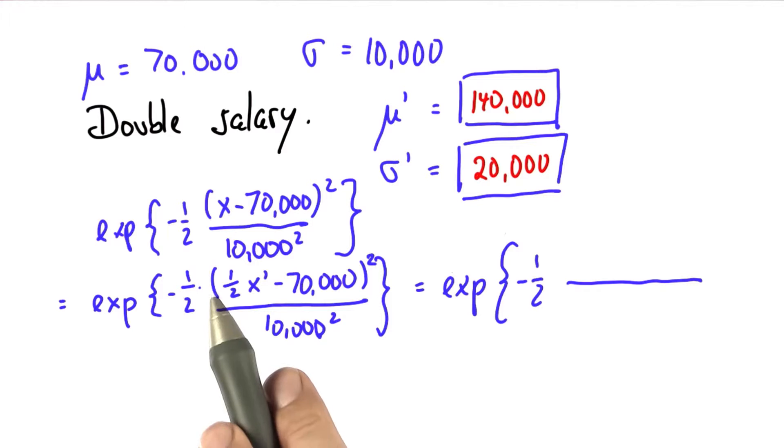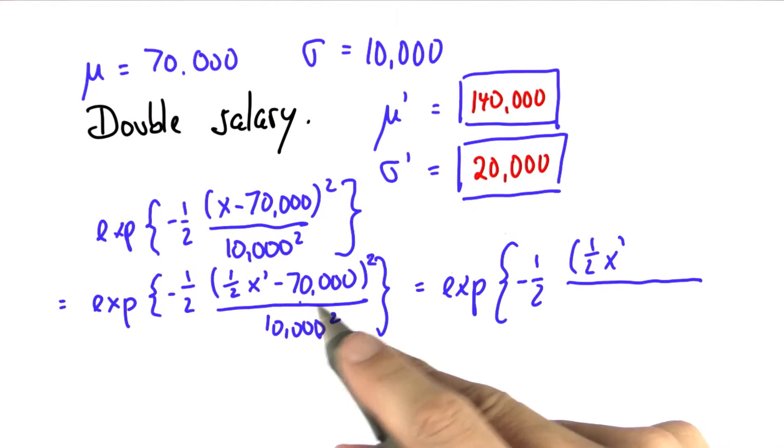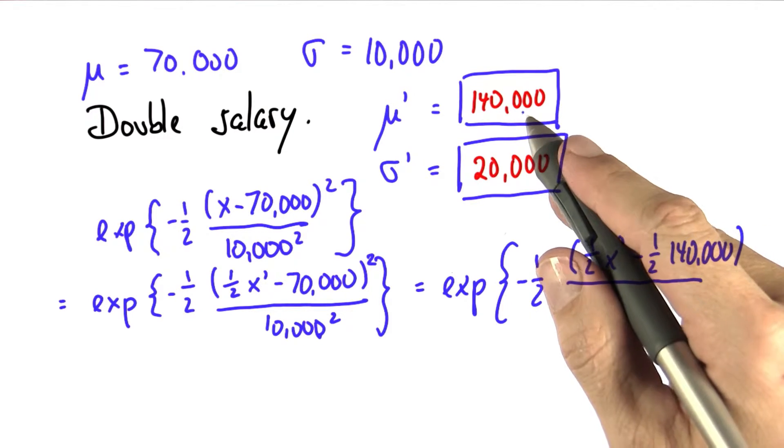The very first thing is I have to bring the half out of the parentheses over here. And there's a trick whereby I rewrite 70,000 as a half of 140,000. And you can see where this is going.